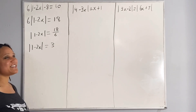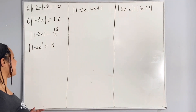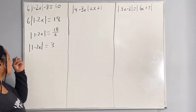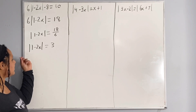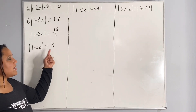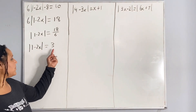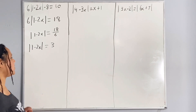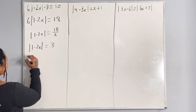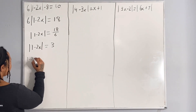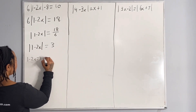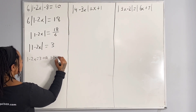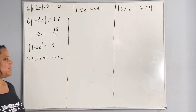Here is the trick when it comes to the absolute value. You want to set what's inside of the absolute value equal to the positive value and also equal to the negative value of what is on the right side of the equation. So we're going to say 1 minus 2x is equal to 3, or 1 minus 2x is equal to negative 3. Then we just solve as usual.